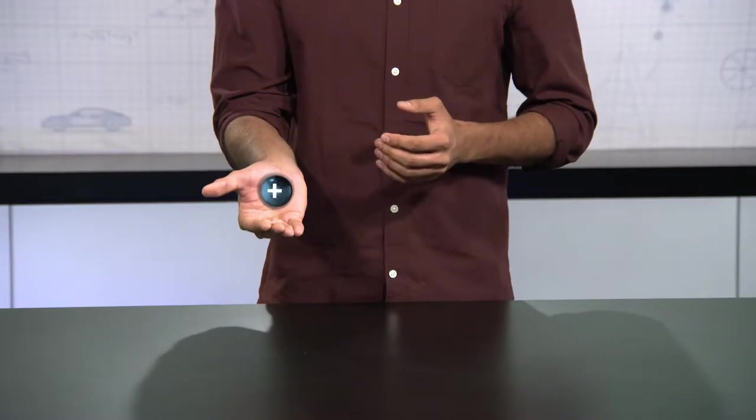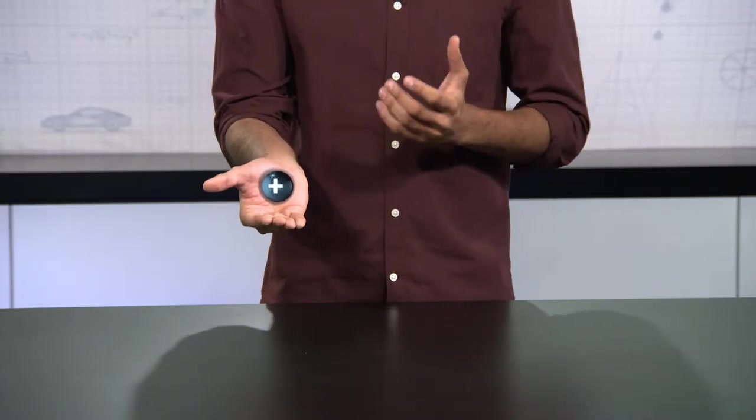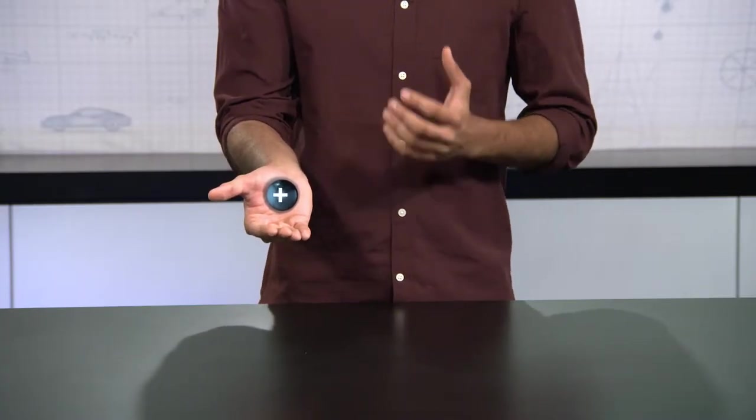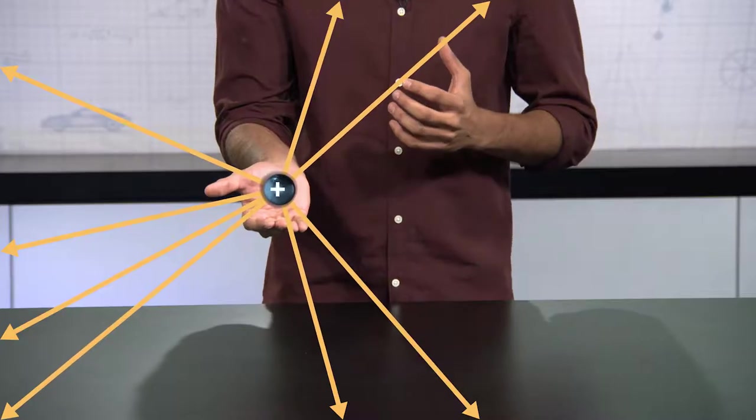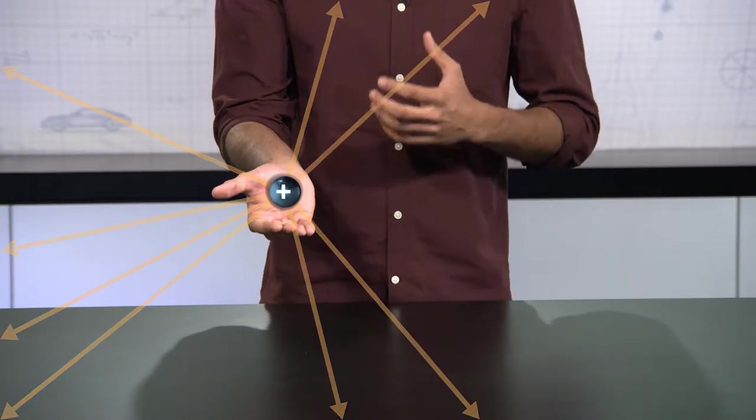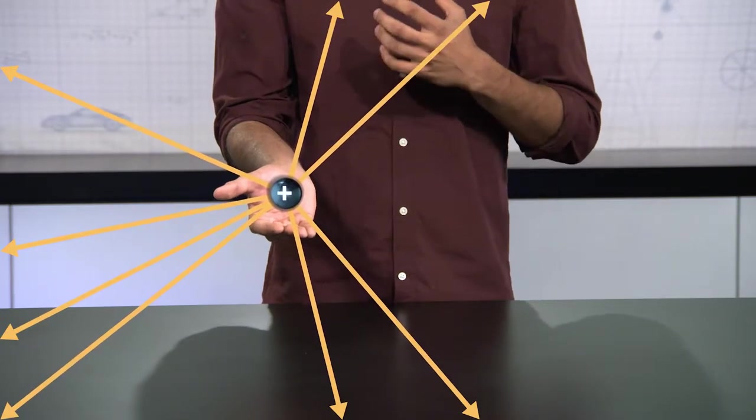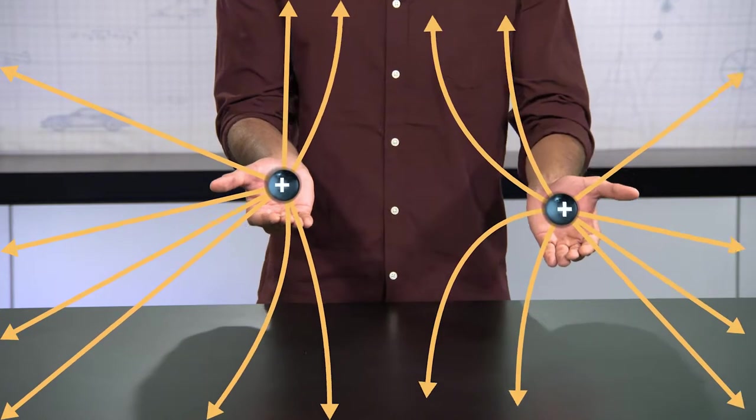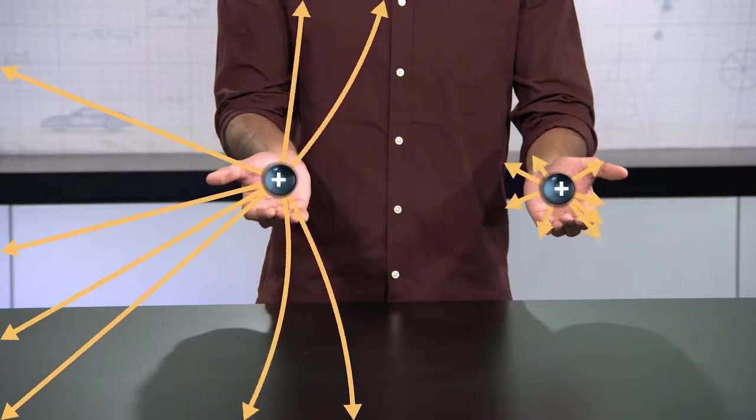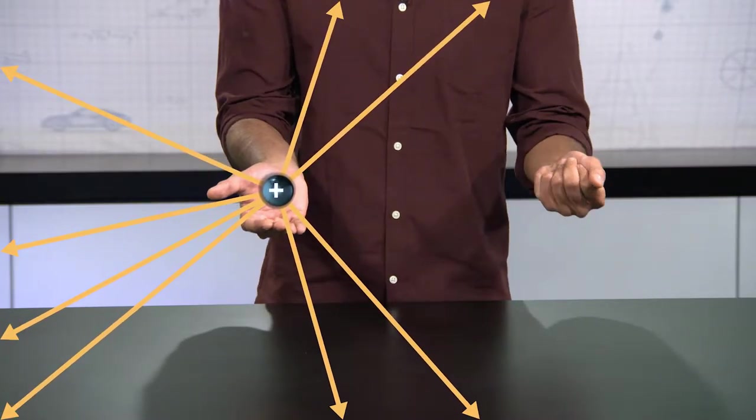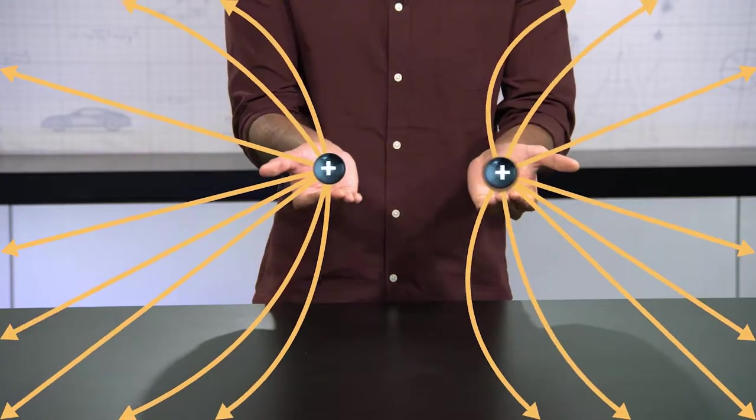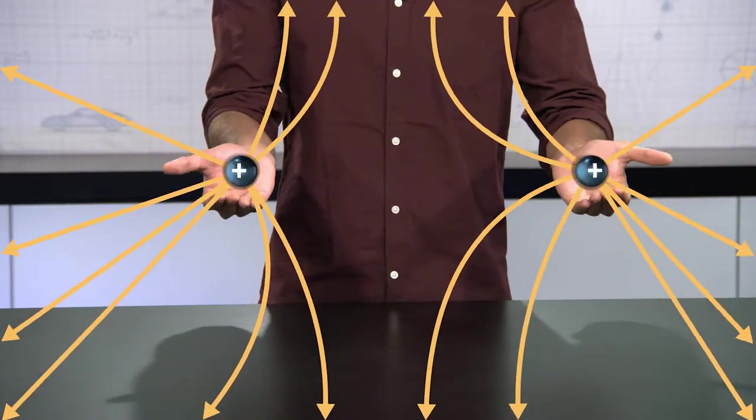But before we get to the details of Coulomb's Law, let's talk about some other aspects of electromagnetism. Imagine a single electric charge sitting all by itself. This charge creates a field all around it, called an electric field. The field is invisible, but we know it's there because it makes other charges move and act differently. The charge only exerts a force when there are other charges present. If it were in empty space, there would be no force. The force is the result of the attraction or the repulsion between the charges.